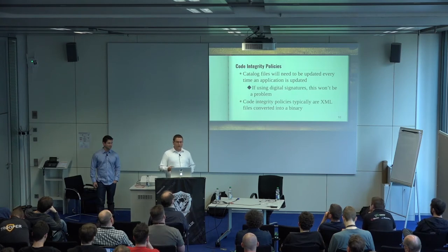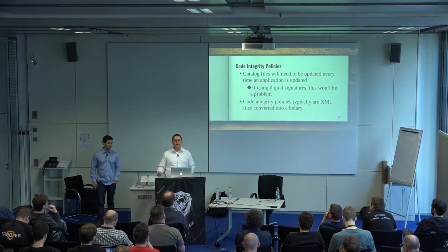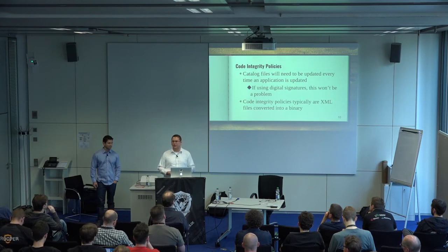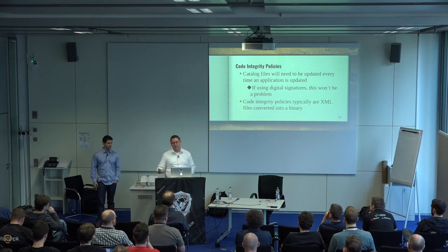The problem with catalog files is that any time an application is updated, you will need to generate a new catalog file. You can already imagine the potential administrative overhead if you have a lot of these applications throughout your environment. Code integrity policies themselves are typically XML, then converted from XML to binary. Windows 10 or Server 2016 interprets and reads the binary, parses it, and uses that to make trust decisions within the operating system.